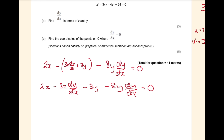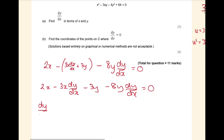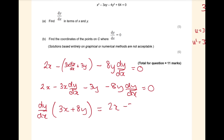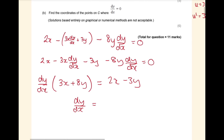I need to rearrange this to get dy/dx equals something. I'm going to add everything with the dy/dx to one side and factorize in one step. On the other side I would have 2x - 3y. So dy/dx = (2x - 3y)/(3x + 8y).